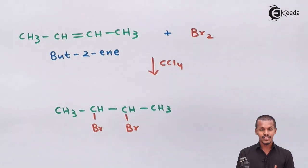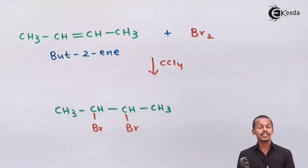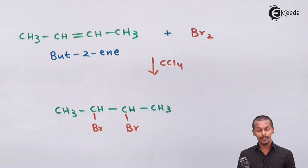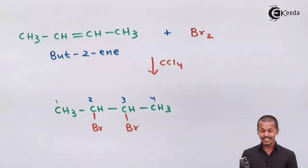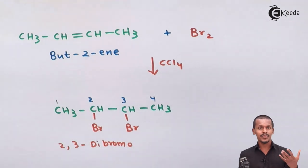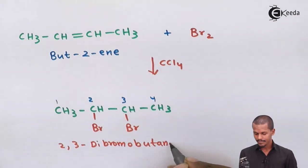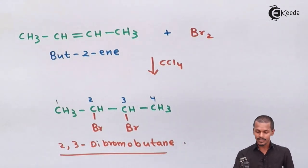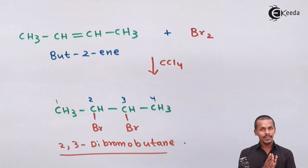This type of dihalide, where two halogen atoms are attached to adjacent carbon atoms, is known as a vicinal dihalide — as we discovered in our previous lecture. In IUPAC nomenclature, if we number the carbons 1, 2, 3, 4, this product is named 2,3-dibromobutane.